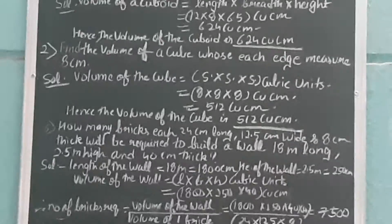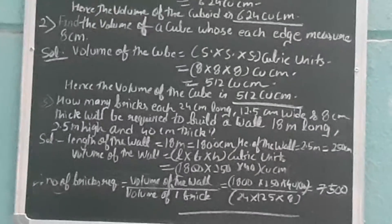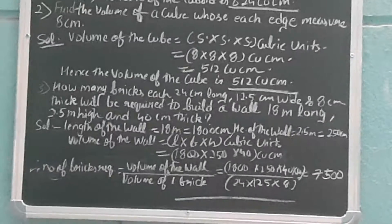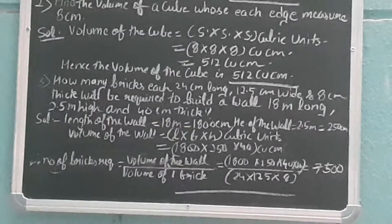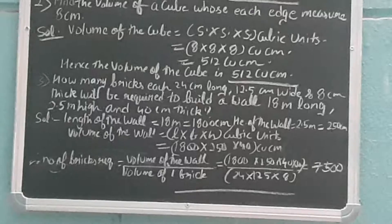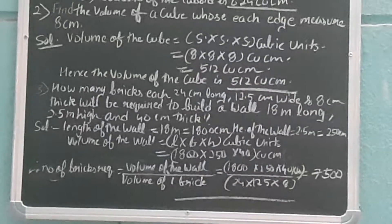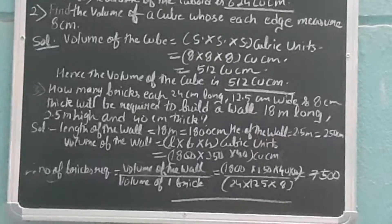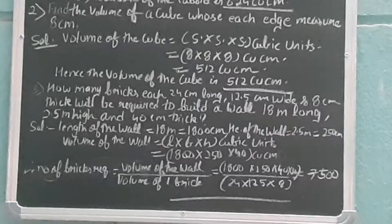Then the last question: How many bricks, each 24 cm long, 12.5 cm wide, and 8 cm thick, will be required to build a wall 18 m long, 2.5 m height, and 40 cm thick?